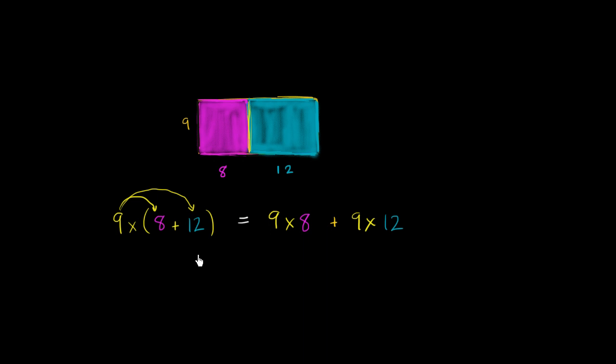And let's actually calculate it just to satisfy ourselves about the area. So if you multiply the length times the entire width, so that's 9 times 8 plus 12, that's the same thing as 9 times 20, which is 180. And over here...